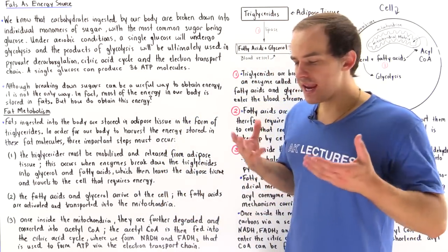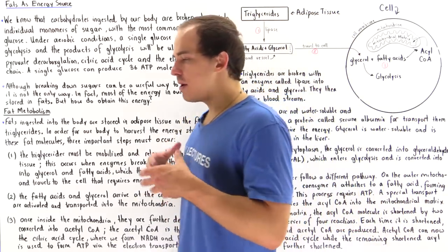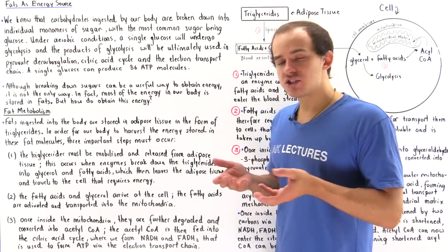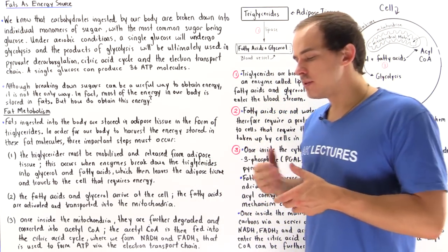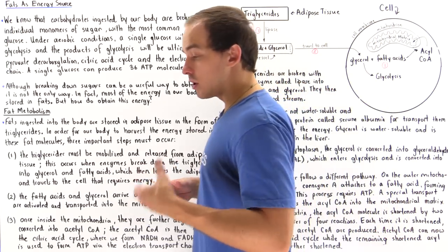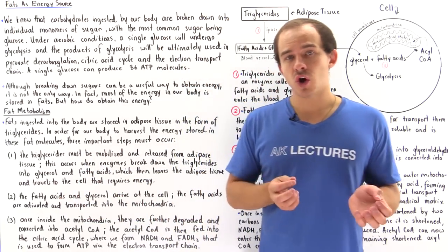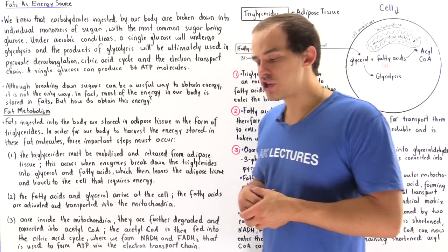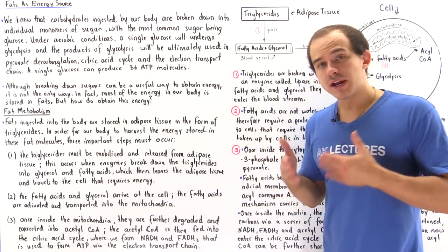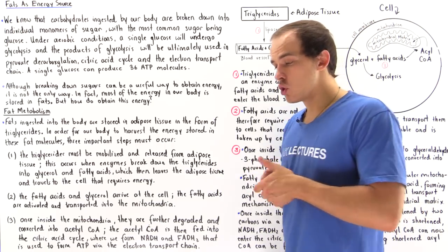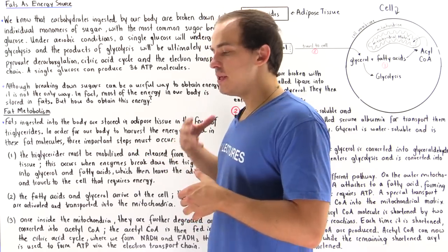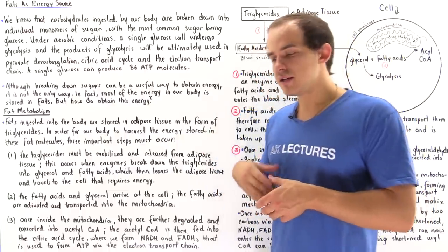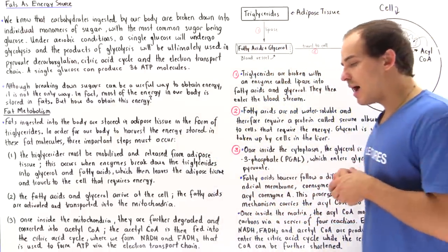One way by which we obtain energy from the surroundings is by ingesting food products, and one type of food product we ingest is carbohydrates. The simplest and most common monomer of carbohydrates is glucose. We can store glucose in our body in the form of glycogen, and when we need to, we break down glycogen into individual glucose molecules, which can be used via aerobic cellular respiration to break down glucose into ATP molecules.